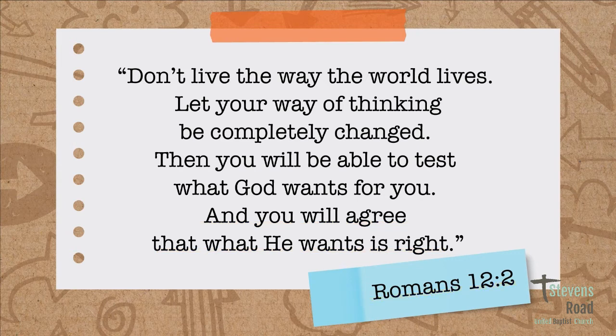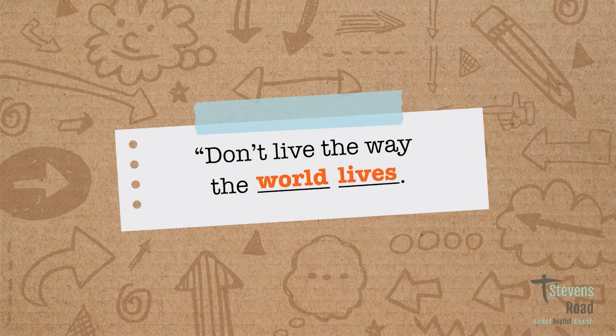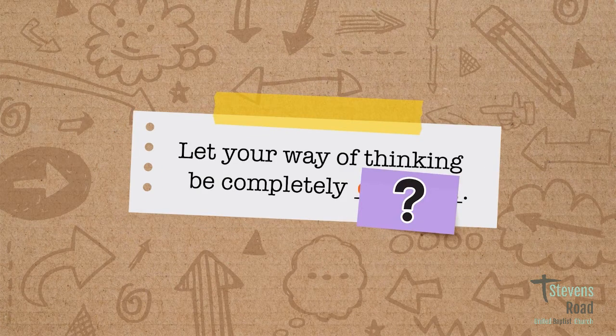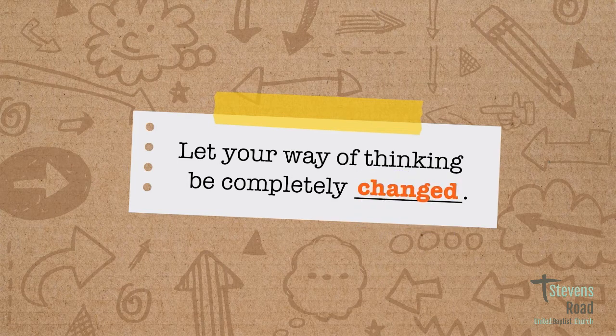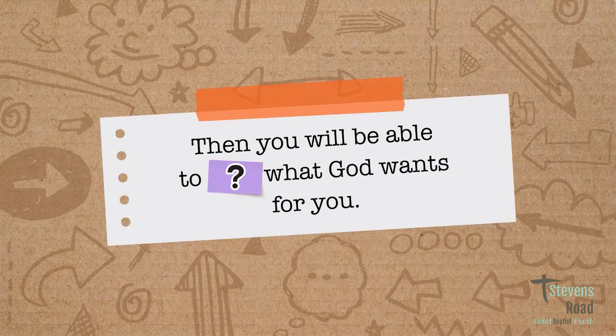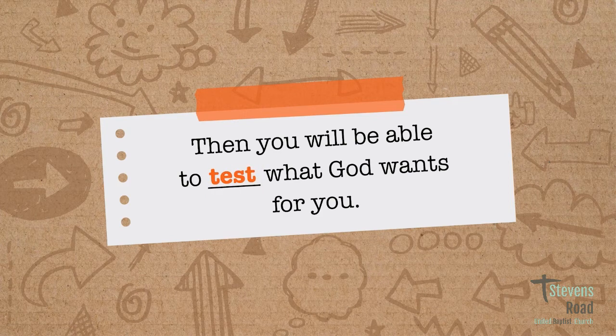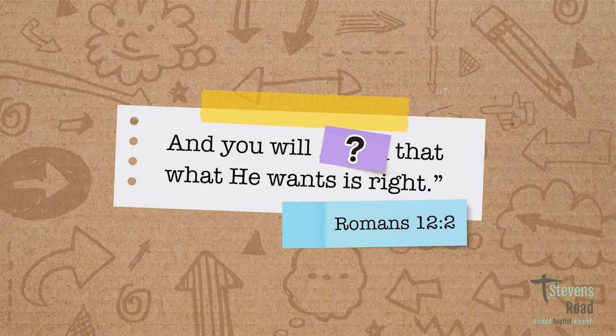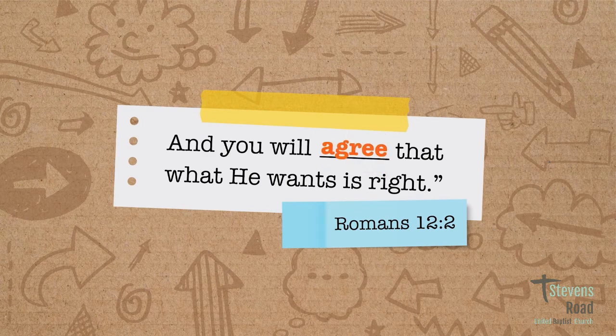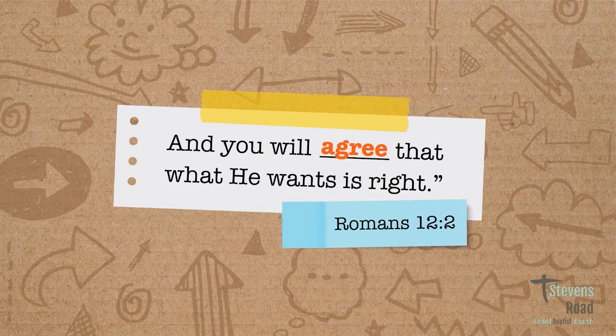Now let's see if you can remember it after we cover up some words. Don't live the way the—don't live the way the world lives. Let your way of thinking be completely—let your way of thinking be completely changed. Then you will be able to—then you will be able to test what God wants for you. And you will—and you will agree that what He wants is right. Romans 12:2. Way to go!